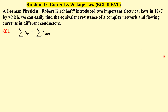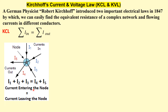Kirchhoff's first law is KCL, or Kirchhoff's current law, and it states that the current entering a node is equivalent to the current leaving the node. So total current I-in should equal total current I-out. In this node we can see that I1, I2, I3 are going in and I4 and I5 are going out, so I1 plus I2 plus I3 equals I4 plus I5.